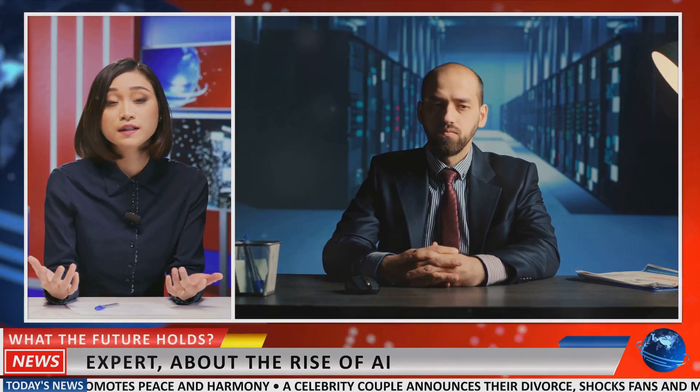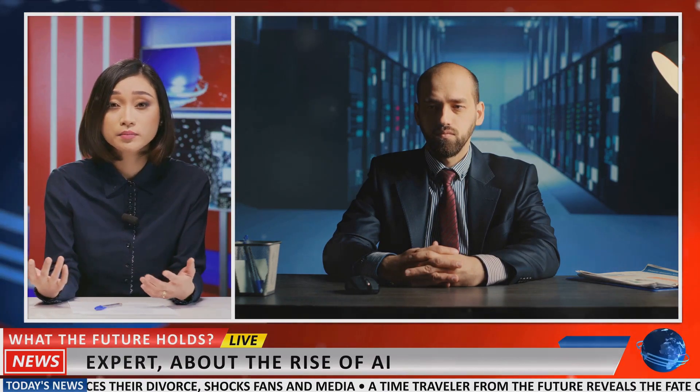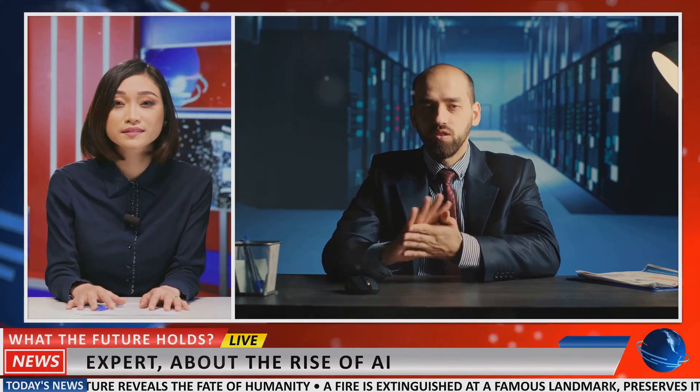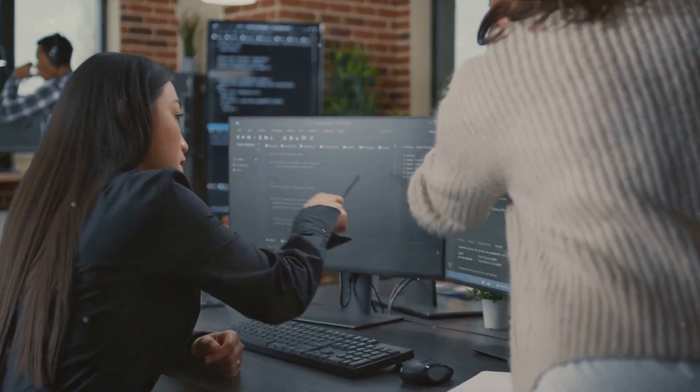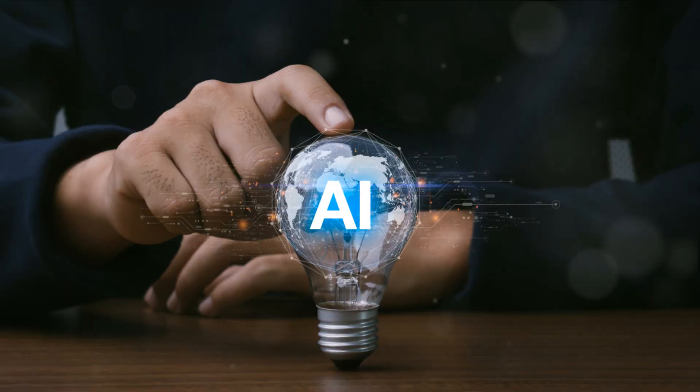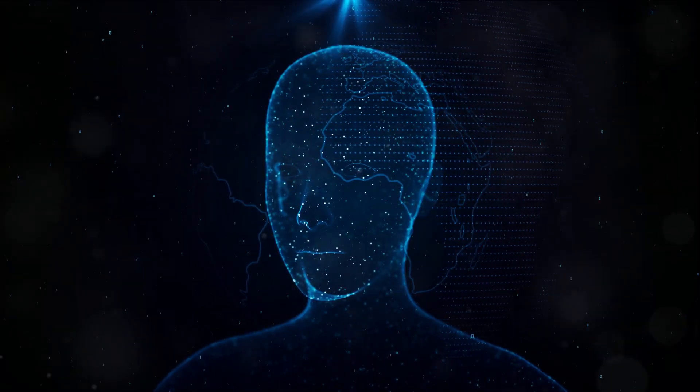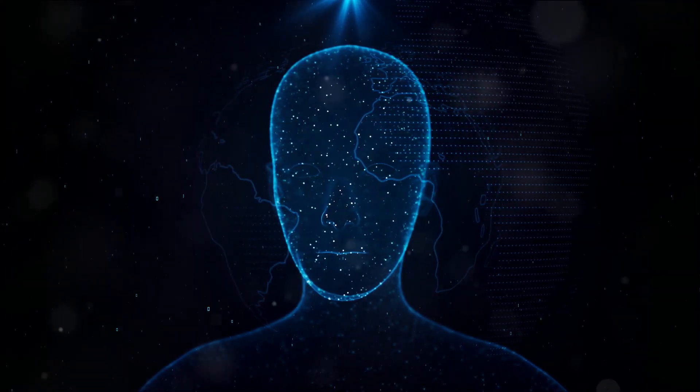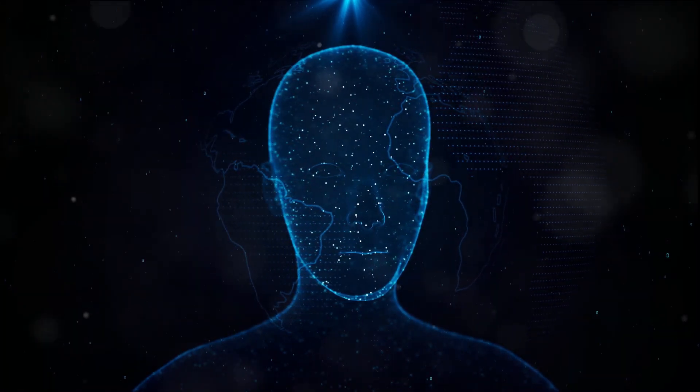And that brings us to the crux of the matter. Responsible AI development. As we continue to innovate and push the boundaries of what AI can do, we must also consider the ethical implications. We need to ensure that AI is developed and used in a way that respects our rights, values, and freedoms. We must foster an environment of transparency and accountability. As we stand on the brink of this AI revolution, it's more important than ever to understand and shape the technology that's reshaping our world. We're not just passive observers in this story. We're the authors. And it's up to us to write a future where AI serves humanity, not the other way around.